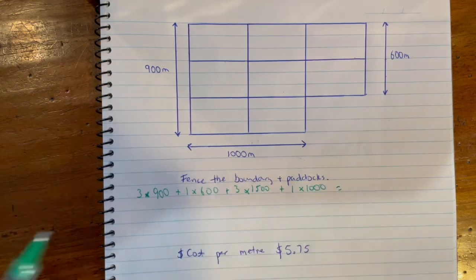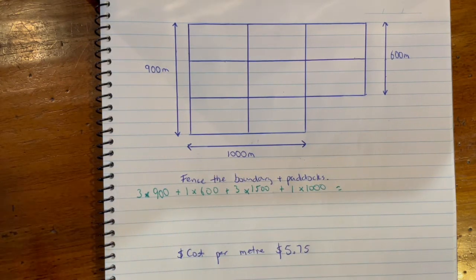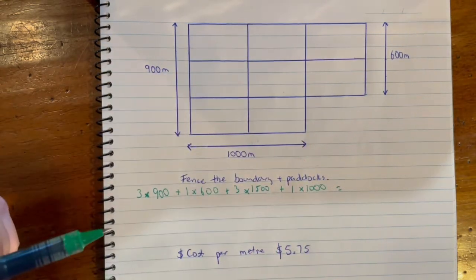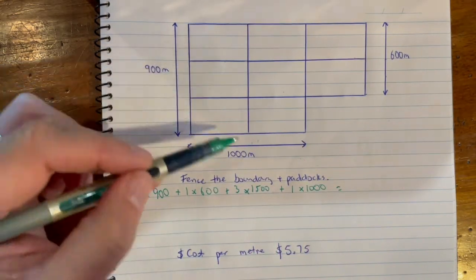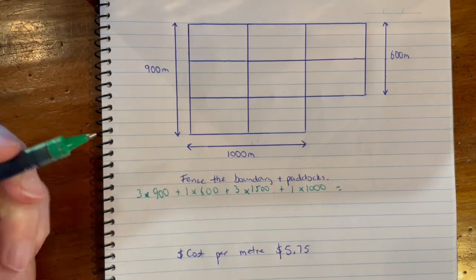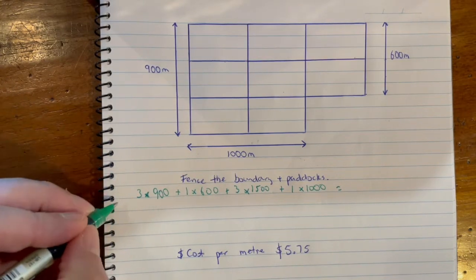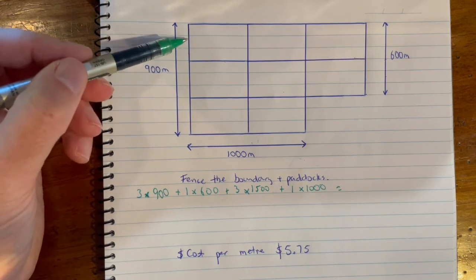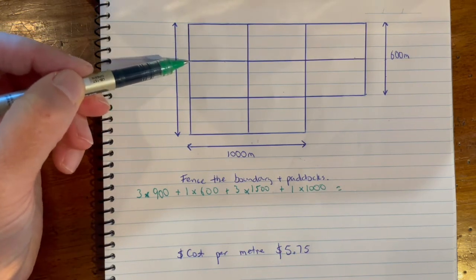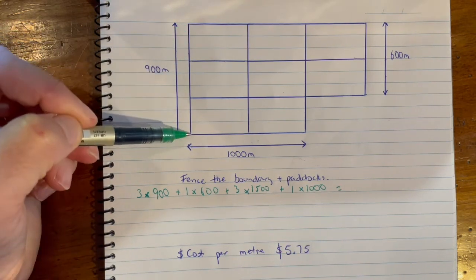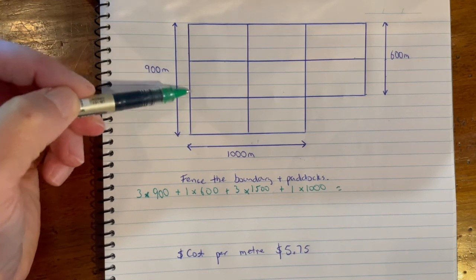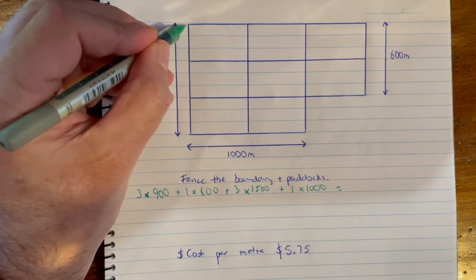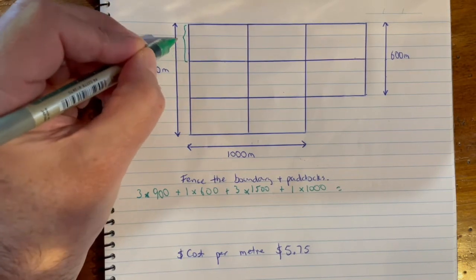This would give you the total number of both the perimeter on the outside of the whole shape but also all of the internal lines for the paddocks. So that would be option A. Option B would be to look at each of these sections individually. So if that section there is 900 meters and there's three parts to the 900, that would make each of these individual little bits 300 meters each.